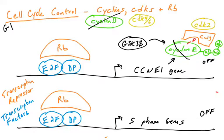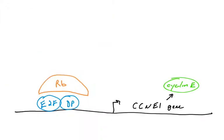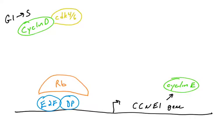Now let's talk about what happens when cells get a signal to grow. They get exposed to growth factors that allow for the production and stability of cyclin D, as we saw in previous videos. Cyclin D levels rise, and cyclin D is able to bind its cyclin-dependent kinases CDK4 or 6. This cyclin D–CDK4/6 complex allows CDK4 or 6 to phosphorylate its substrate, which in this cartoon is the RB protein.